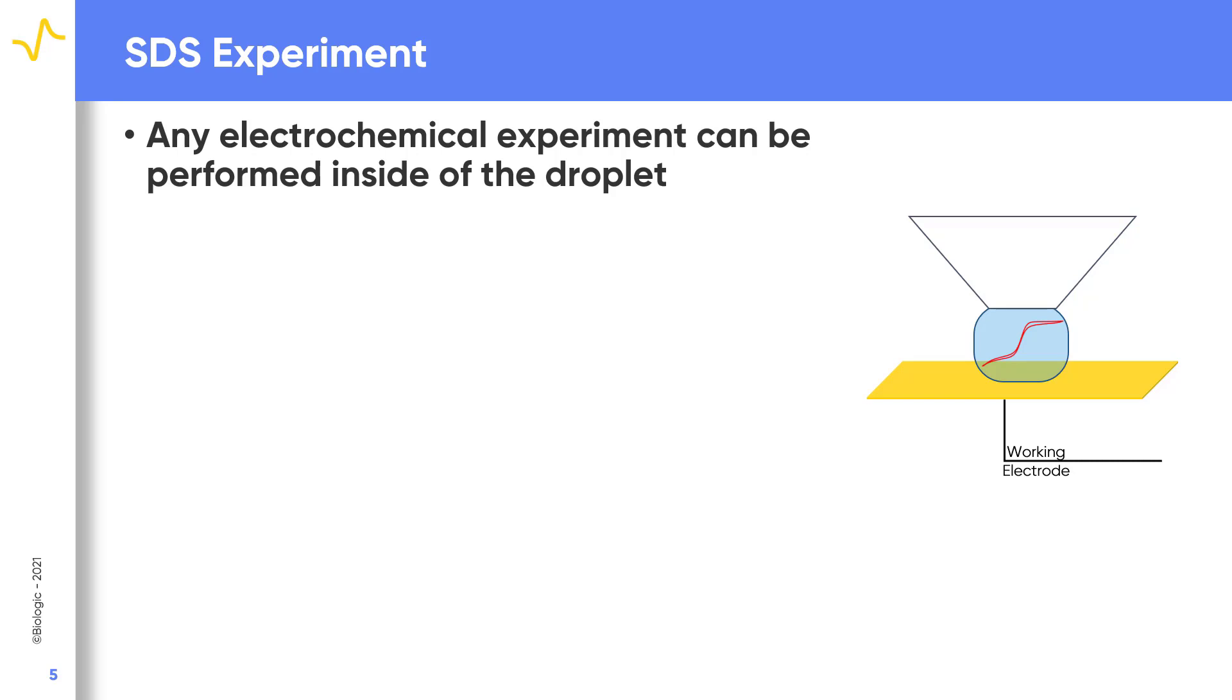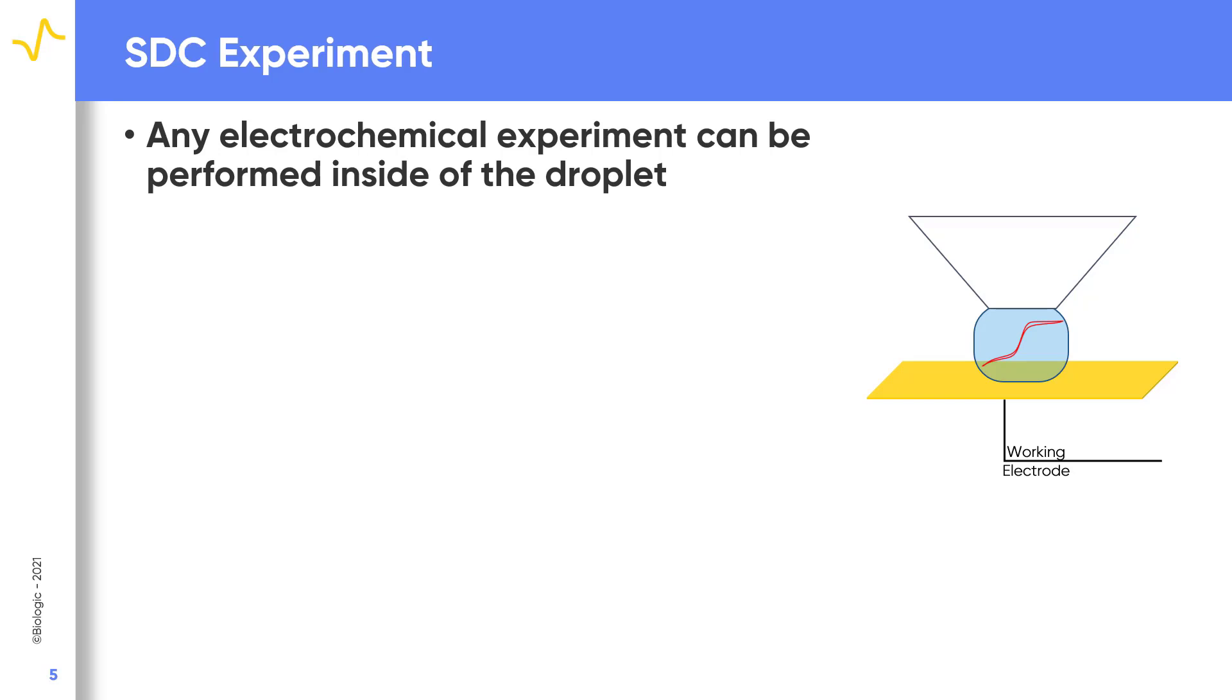One of the great advantages of the SDC technique is that any electrochemical experiment available to the user, including electrochemical impedance spectroscopy, can be performed directly and locally on the sample within the confines of the droplet.